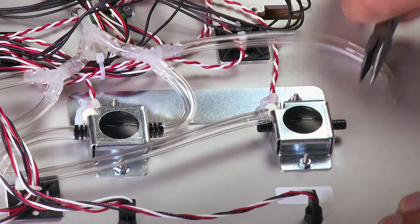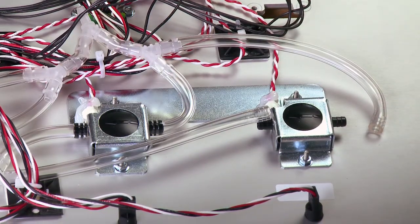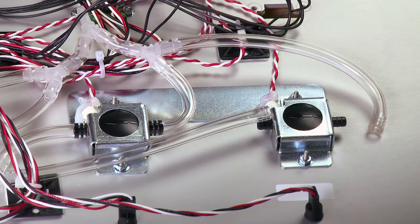Using needle-nose pliers, gently pull straight back until the tubing becomes loose from the hose barb fitting. There are two connections to remove: an inlet tube and an outlet tube.